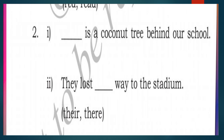Question two: first blank: __ is a coconut tree behind our school. Second blank: they lost __ way to the stadium. The words in brackets are T-H-E-R-E (there) and T-H-E-I-R (their). Answer: THERE is a coconut tree behind our school. They lost THEIR way to the stadium.